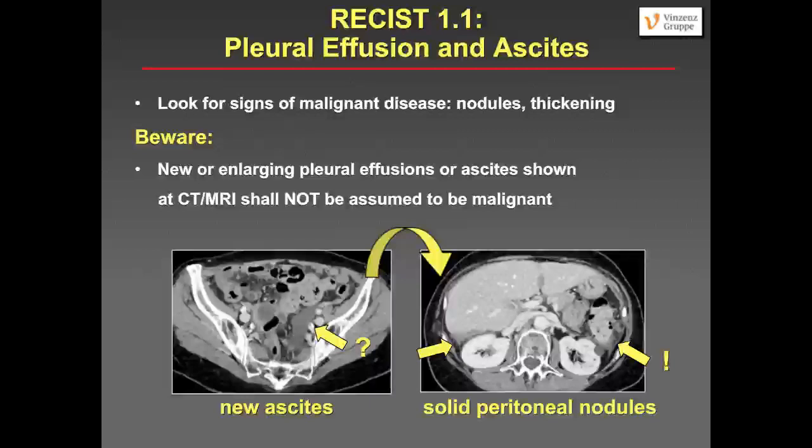Pleural effusion and ascites can be a sign of peritoneal or pleural tumor spread, but look for signs of malignant disease. If you just have new or enlarging pleural effusion or ascites at CT or MRI, this should not be assumed to be malignant. New ascites alone does not qualify as a non-target lesion. Look for solid components — peritoneal nodules in the paracolic gutter qualify as non-target lesions. But if you just see ascites, don't say it is a non-target lesion.